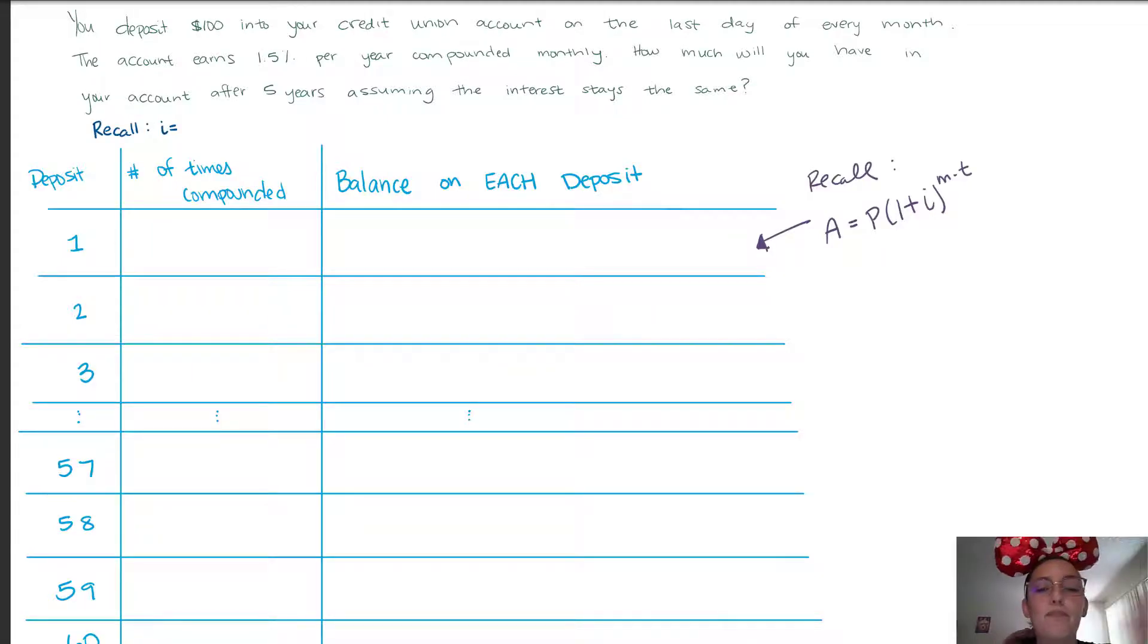Back to the example. This account earns 1.5 percent per year compounded monthly. So how much will we have in our account after five years assuming that the interest rate stays the same? Something that is different about this example compared to the examples that we've done before with simple interest and compound interest is we're going to be depositing a certain amount monthly.